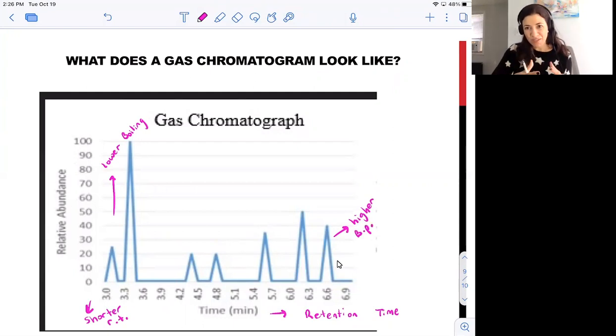The other really useful piece of information we can gain from a gas chromatogram is the number of components present in a sample. If I count up the number of peaks that I observe, that tells me how many individual unique components I'm detecting in my sample.